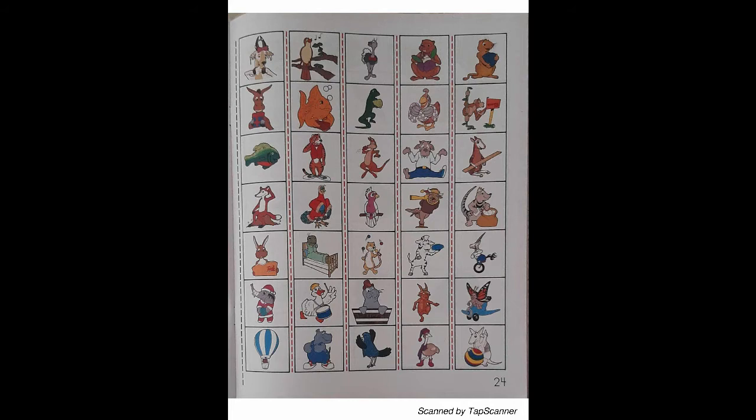Jaguar, Walrus, Umbrella Bird, Fawn, Quail, Ox, Yak, Zebra, Ibex. Set envelope number 3 aside.